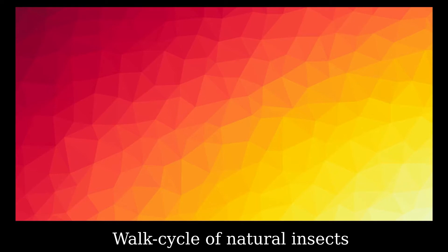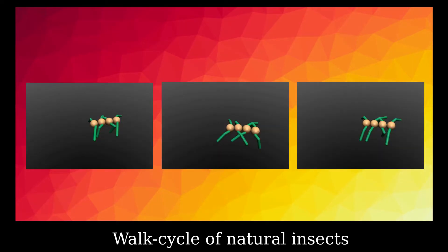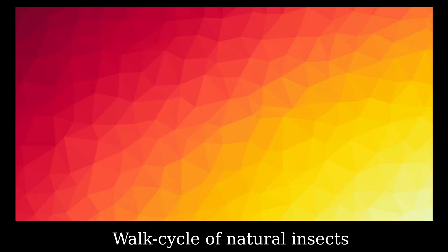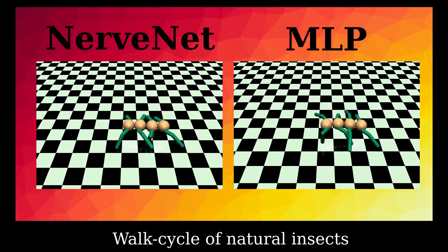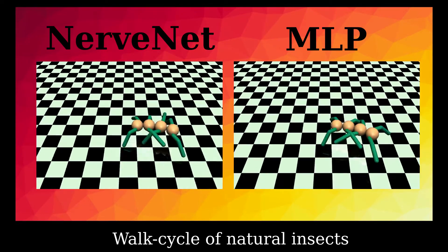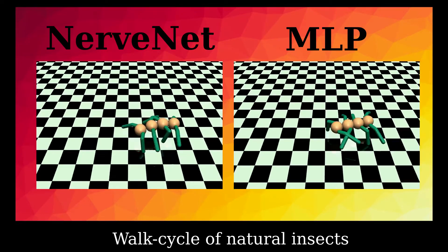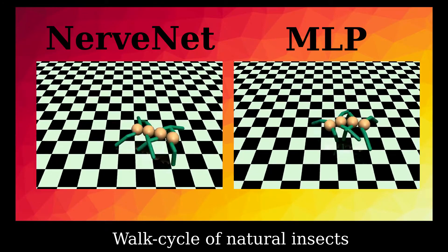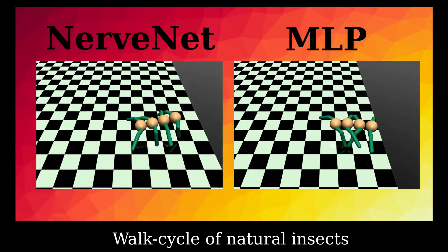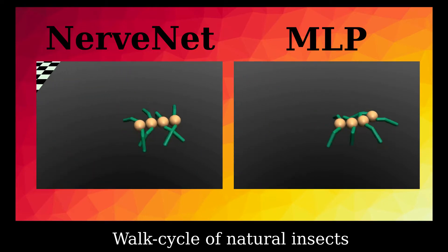Note that NerveNet agents develop a walk pattern that is very similar to the walk cycle of natural insects. Legs are organized into two periodic phase-shifted behavior sets. Here are two agents trained using NerveNet and MLP. The MLP agent neglects some legs during walking and does not have the natural walk cycle of insects.